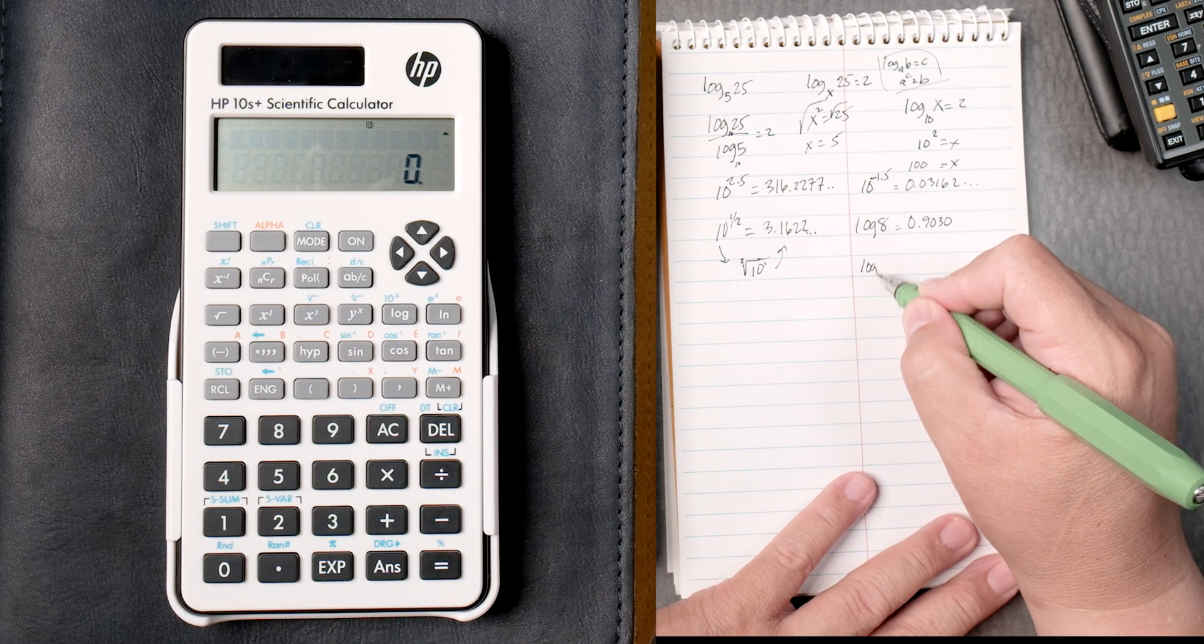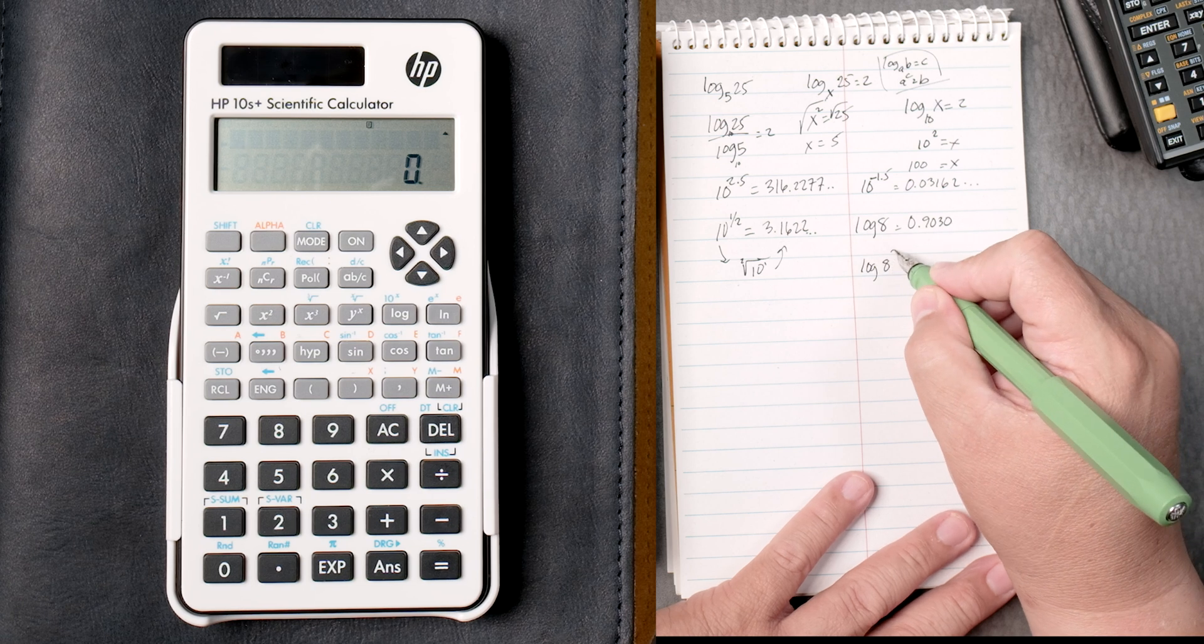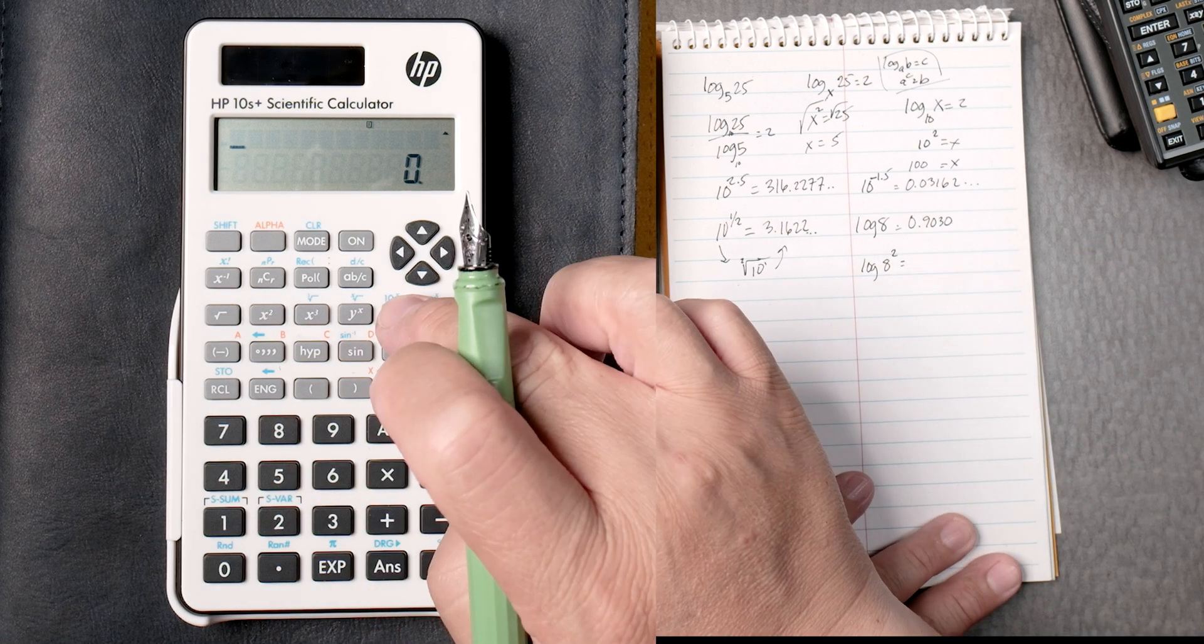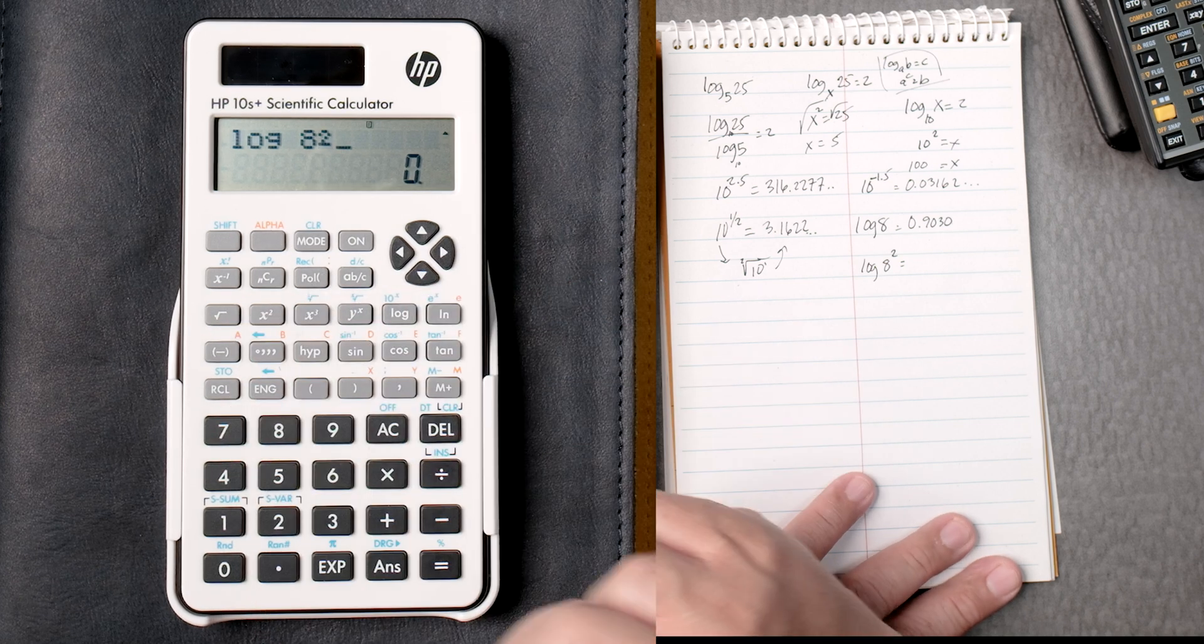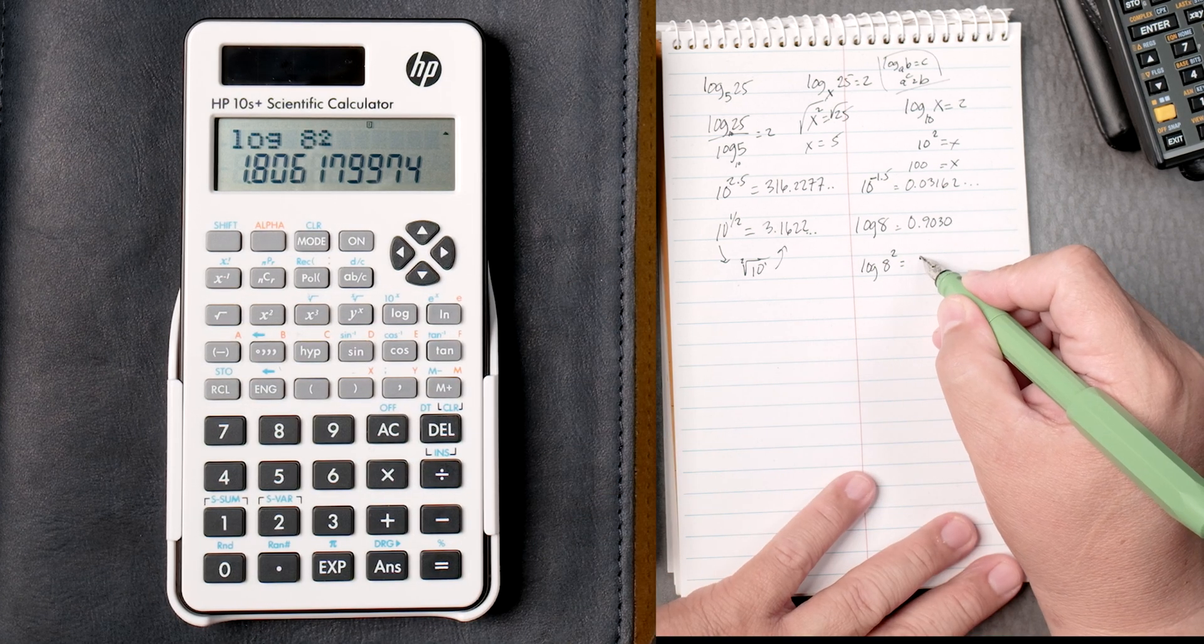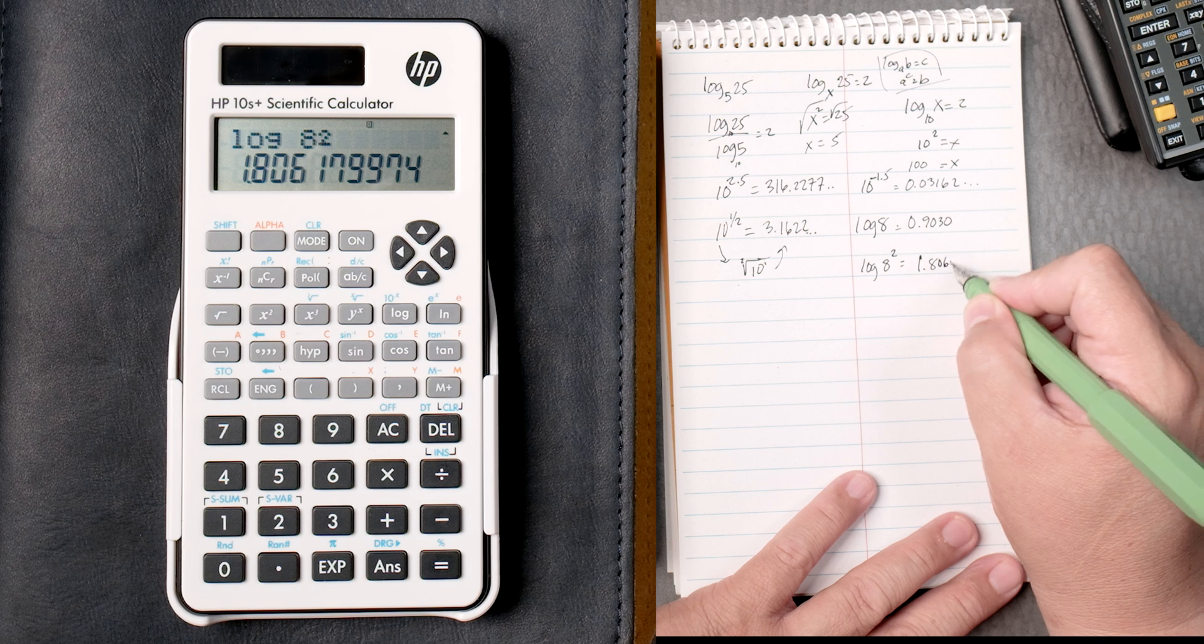The log of 8 squared. Well, log 8, and then we can square it. Equals. That gives you 1.80617.